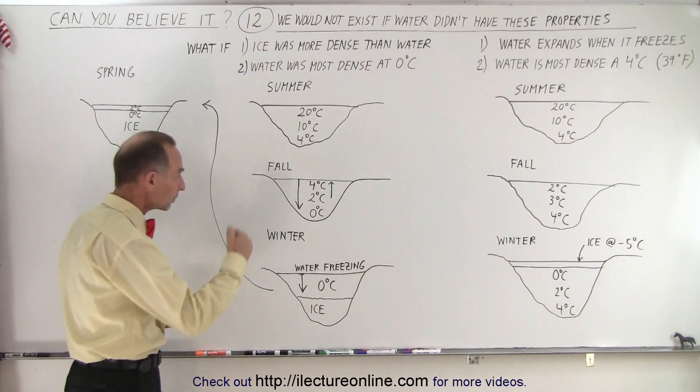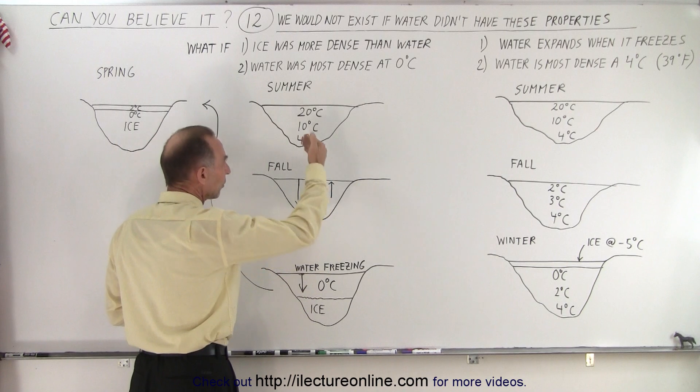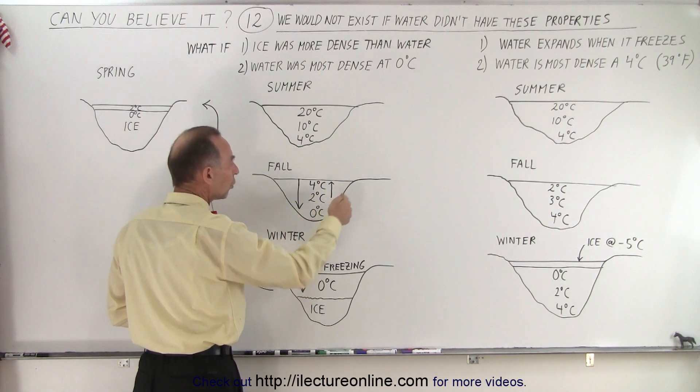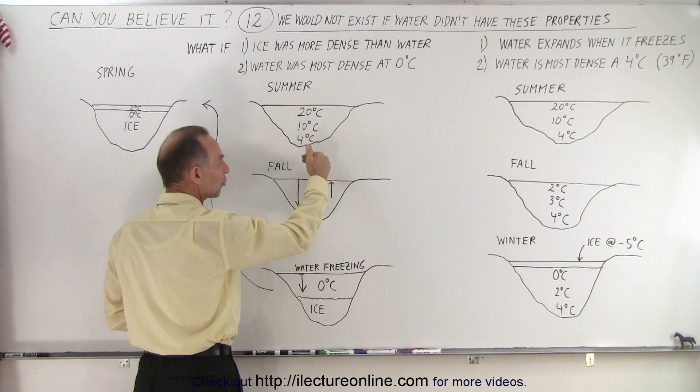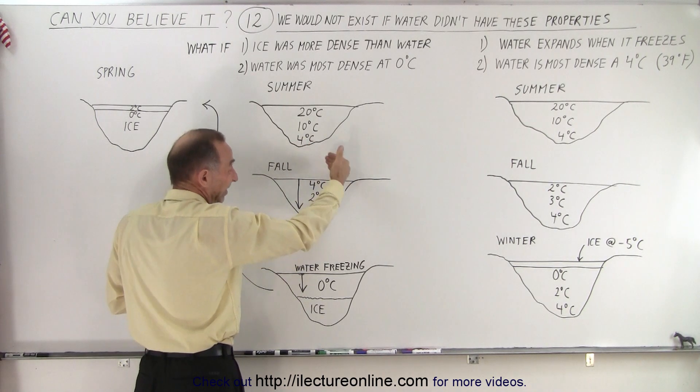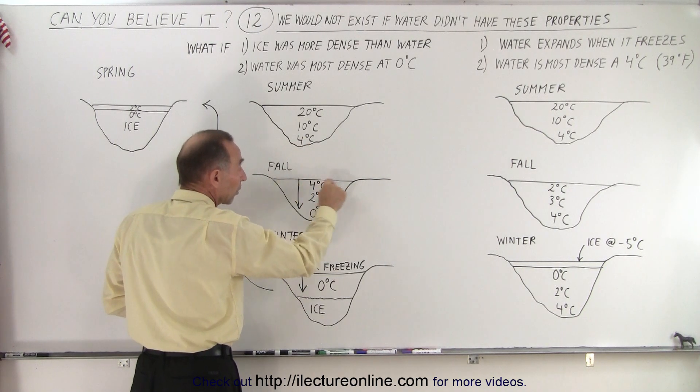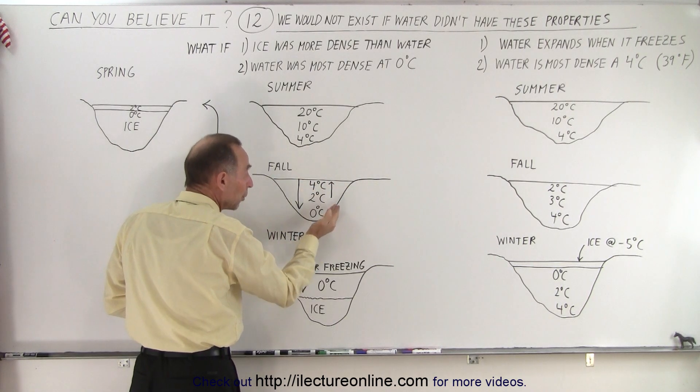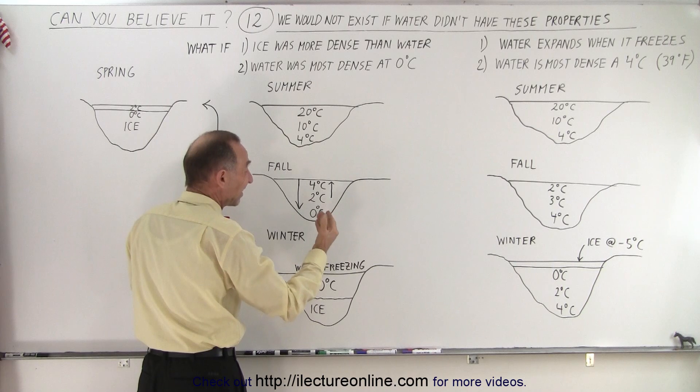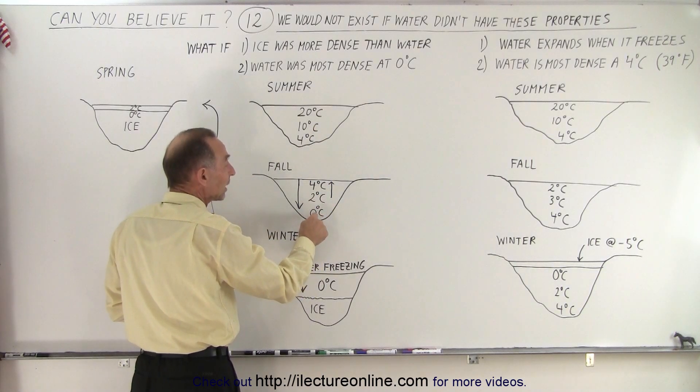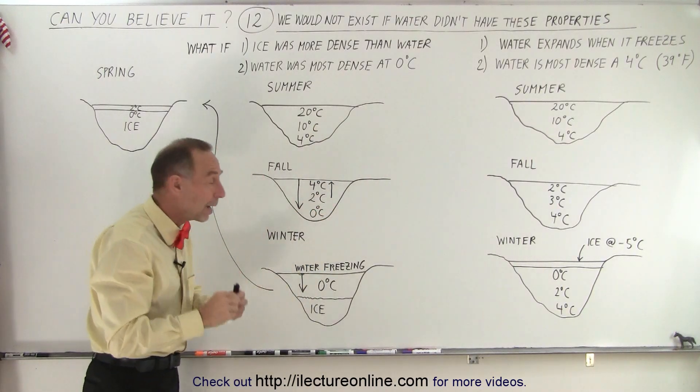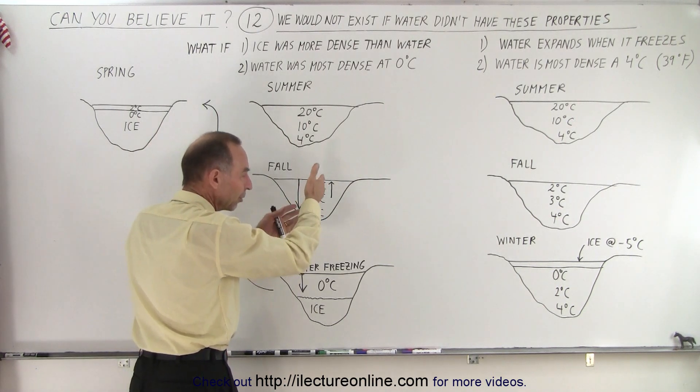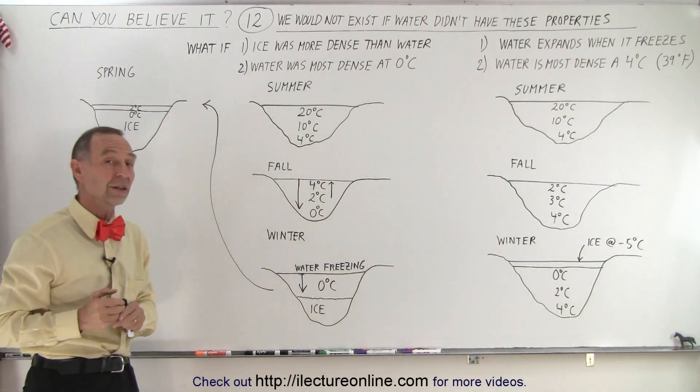But then as fall arises, notice that the water would continue to get cooler and cooler, especially when the air temperature becomes cold. And eventually, when the temperature above the lake becomes less than zero degrees centigrade, the water at the top would cool down. Colder water would sink to the bottom. Warmer water would be pushed to the top because it's less dense. And eventually, you would get zero degree water at the very bottom and four degree water at the top. Of course, it could be different numbers, but that's the trend that you would see in the fall.